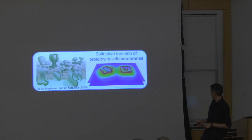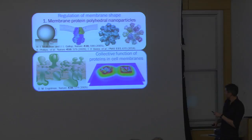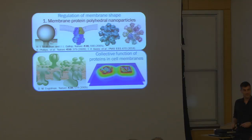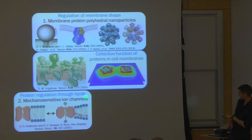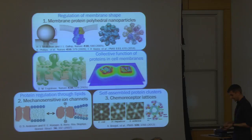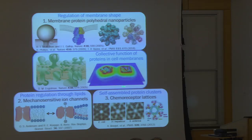I will try to give you a couple of examples of collective membrane phenomena and how we can think about them from the perspective of physics. The first important class relates to the regulation of membrane shape during, for instance, endocytosis or the vesiculation of little membrane vesicles. We'll look at this in the context of membrane protein polyhedral nanoparticles. A second example is the regulation of protein function through the surrounding lipid bilayer, which we'll think about in the context of mechanosensitive ion channels. Finally, a third example is the self-assembly of membrane proteins into regular two-dimensional lattices in the cell membrane — in the context of mechanosensitive ion channels and, if there's time, chemoreceptor lattices.